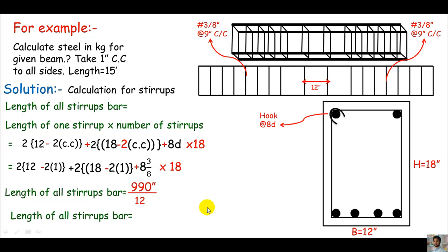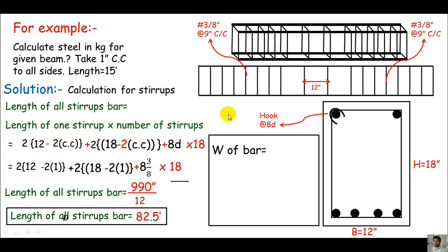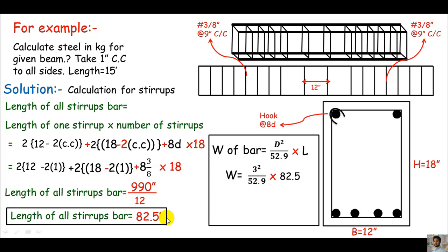Now that we have the length of all stirrups as 82.5 feet, we can calculate the weight. Using the same formula — d² divided by 52.9 times the length — the diameter for a number 3 bar is 3 mm (suta). So: 3² divided by 52.9 times 82.5 = 0.17 times 82.5.